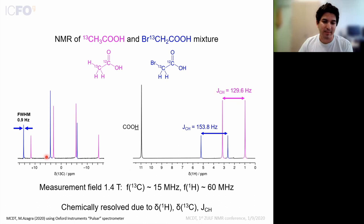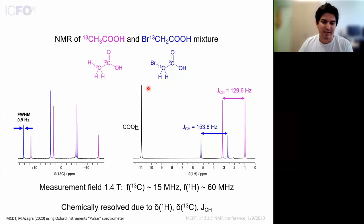This spectrum was measured in a magnetic field of 1.4 tesla, a proton frequency of about 60 megahertz. So if you're familiar with conventional NMR, this spectrum is easy to interpret. We see multiplets consistent with the chemically shifted Larmor frequency, perturbed by J coupling splittings. Carbon splits into a triplet for the CH2 system in blue, and into a quartet for the CH3 system in pink.